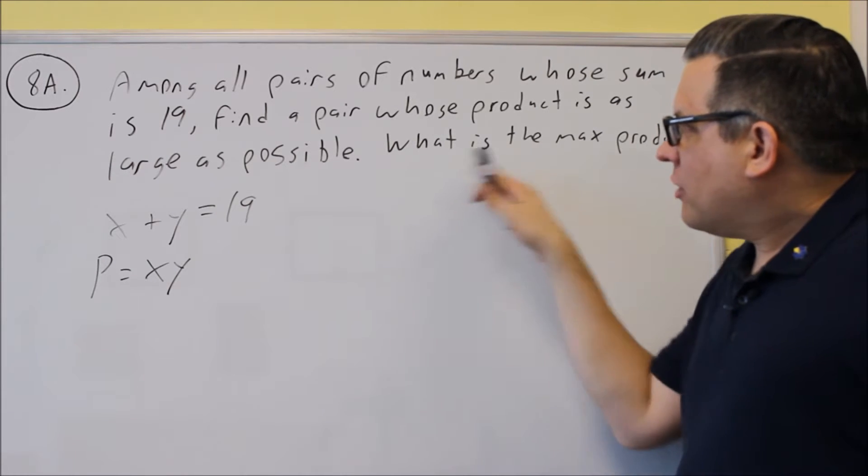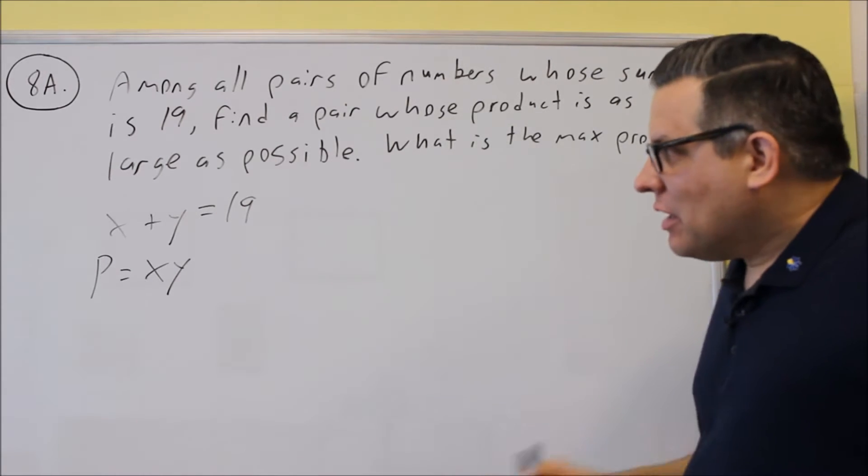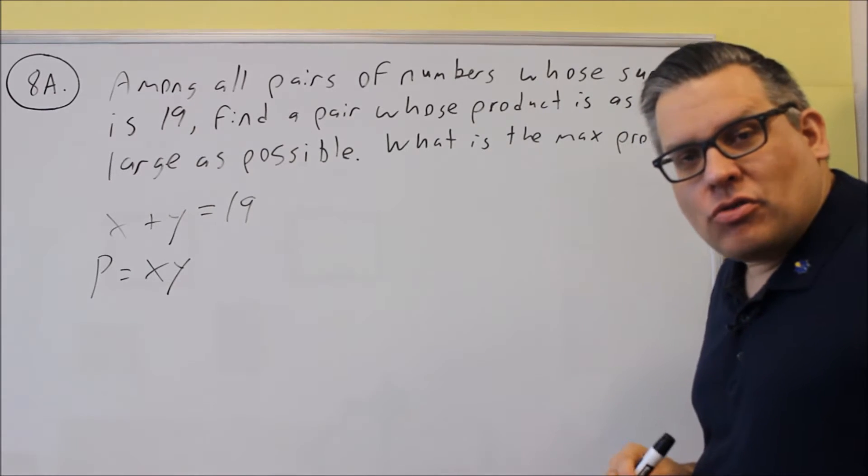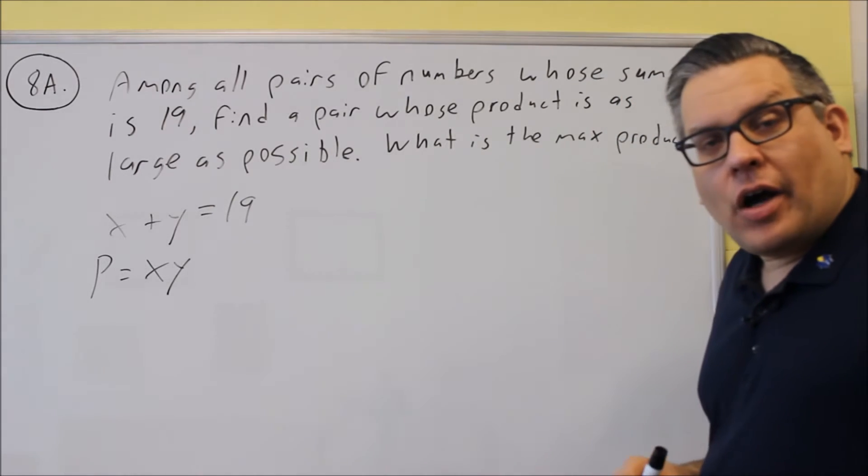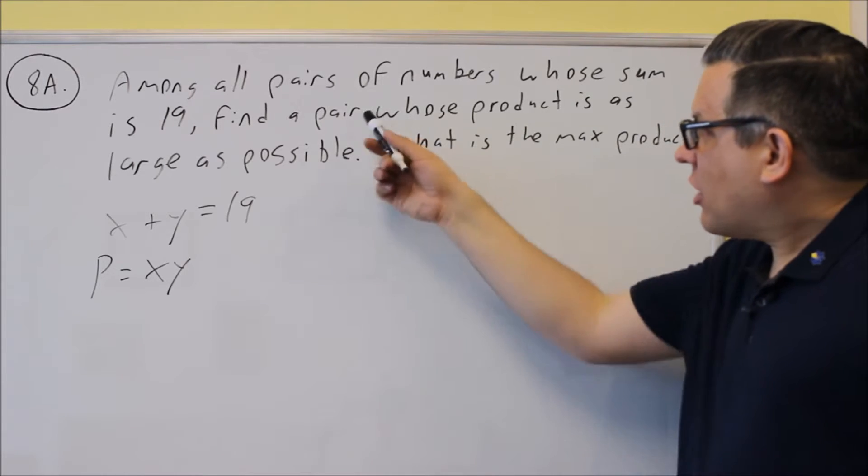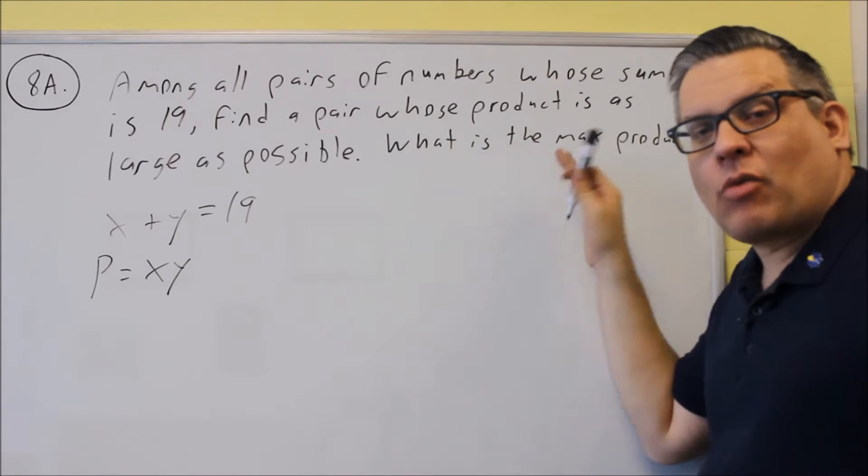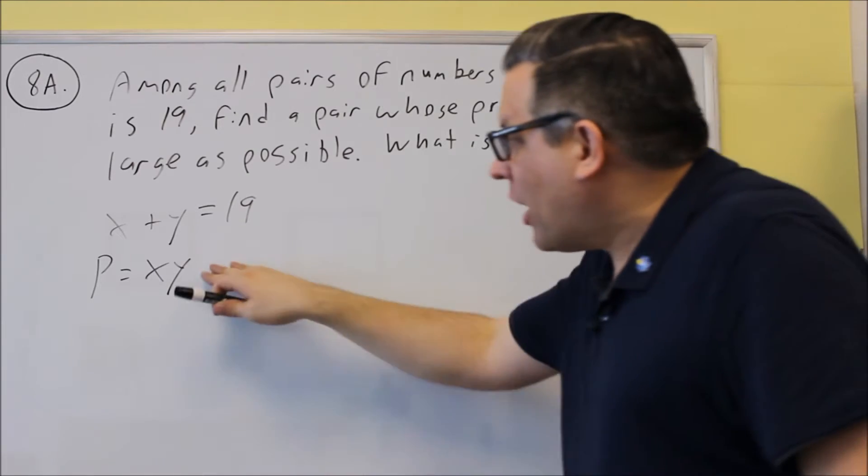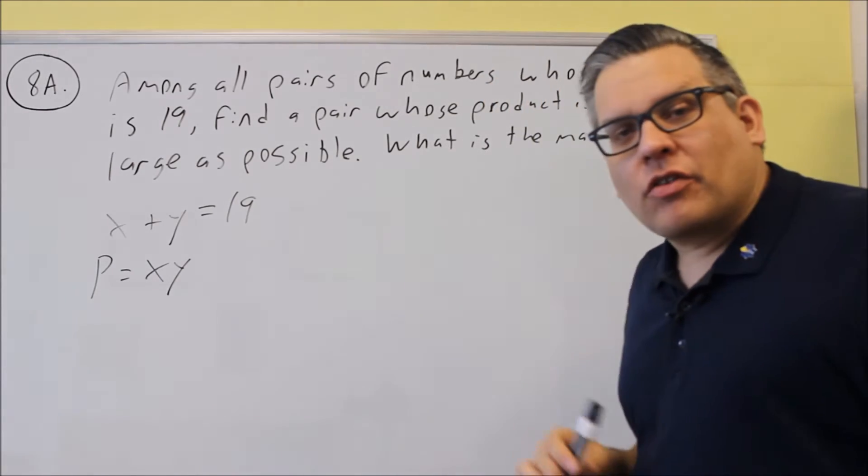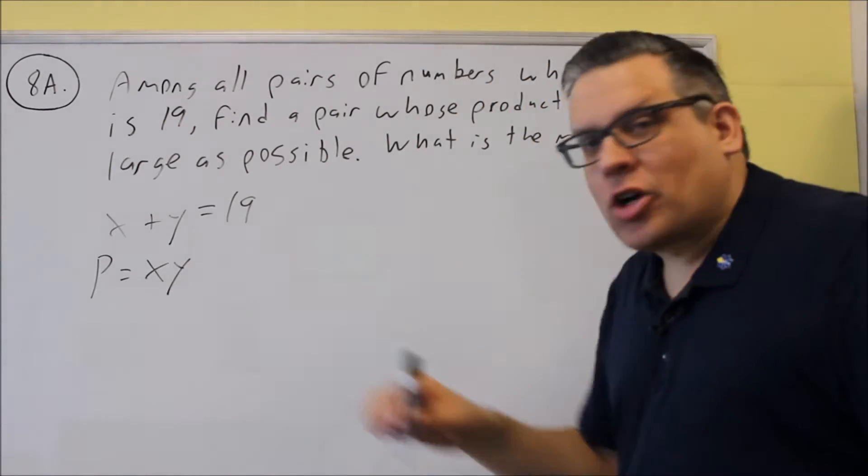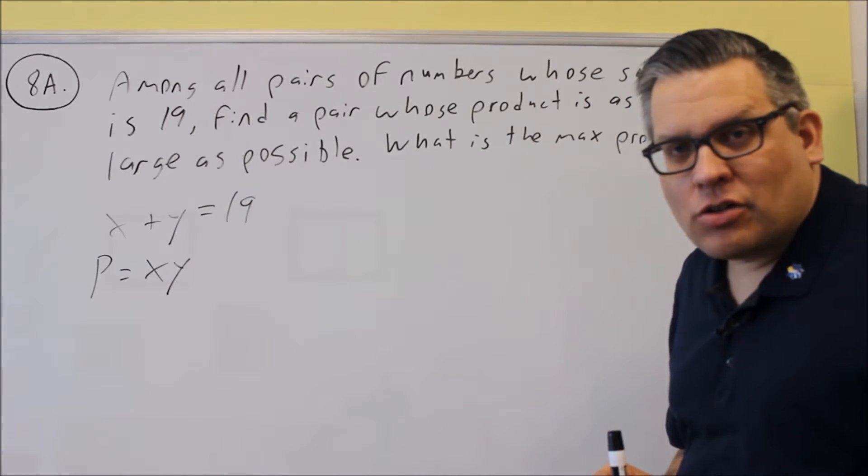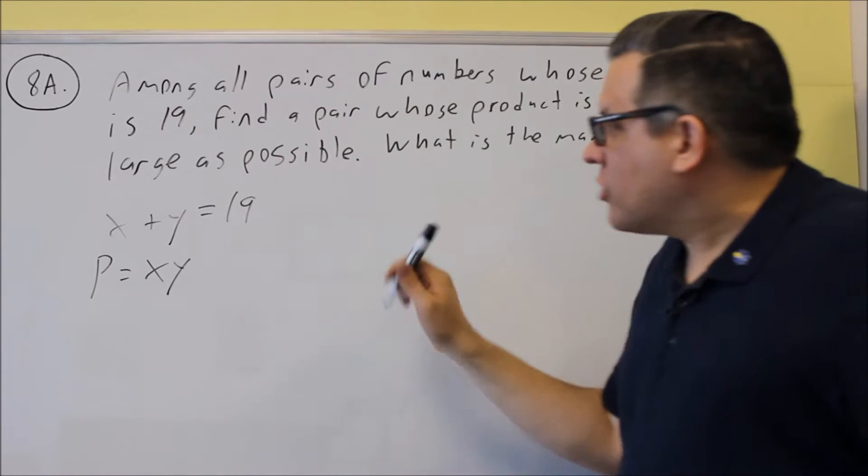And so now in order to find what they're asking for, I've got to somehow put these two together into one equation. So since they're talking about product as large as possible and what's the maximum product, I want to come up with a formula for product. And I want to get rid of one of the variables that's here. I don't want to keep two variables in it because there's not very much I can do with that. So I'm going to take the first equation. What I'm going to do here is I'm going to solve.